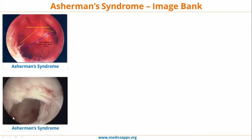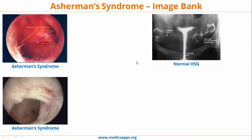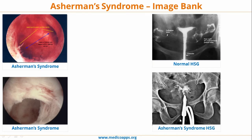This is another case where the fibrous bands are much easier to appreciate. This is a normal hysterosalpingogram, where the uterus and fallopian tubes are very clearly visualized. In contrast, in the hysterosalpingogram of an Asherman's syndrome case, you can see filling defects and the uterus is not clearly delineated.